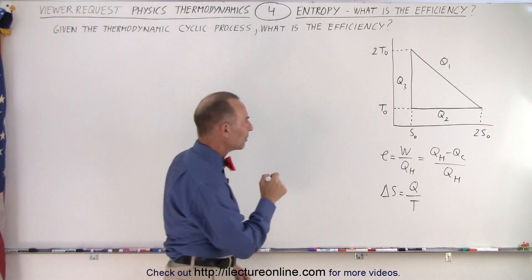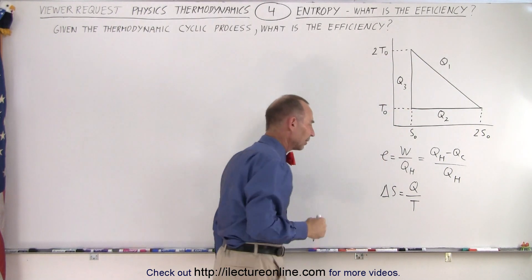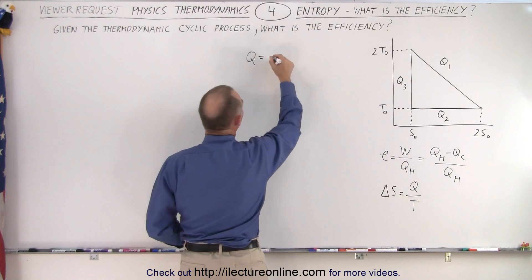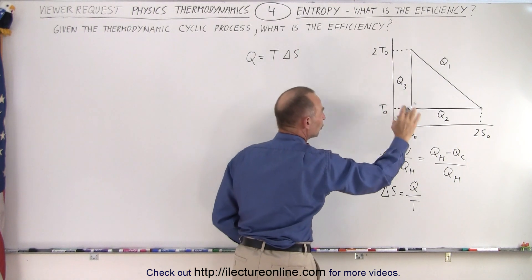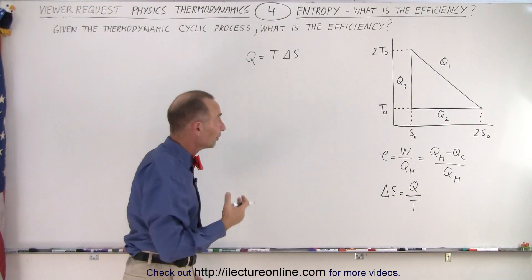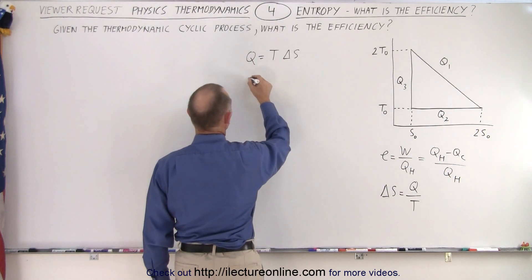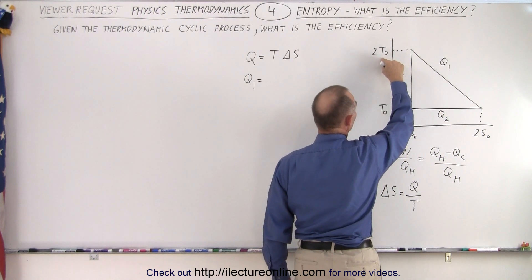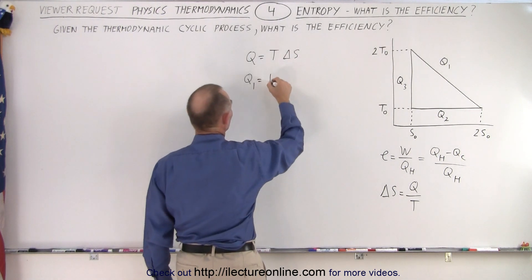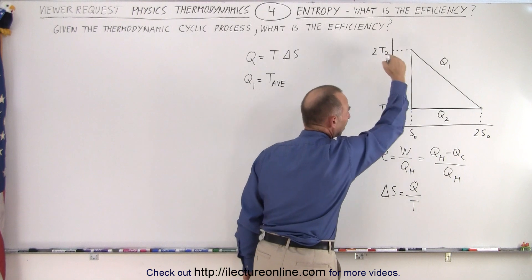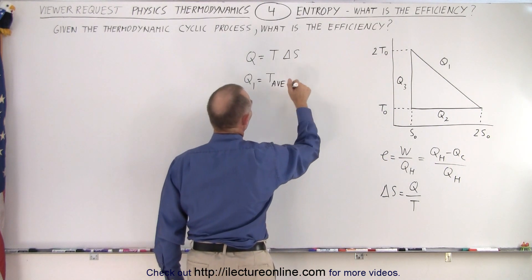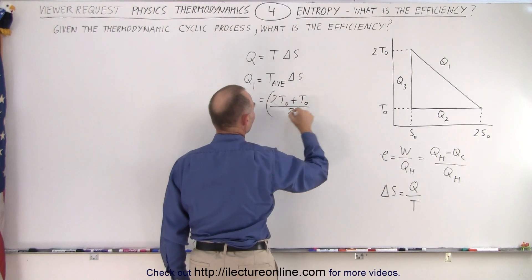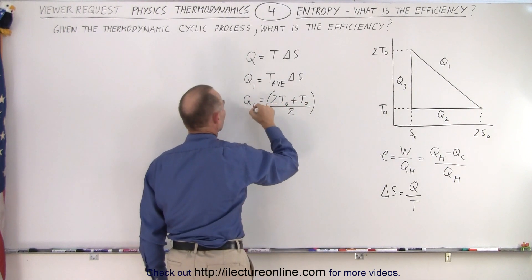We have three processes: Q1, Q2, and Q3 together — they form a cyclic process. Let's use Q equals T times delta S. So we can calculate Q1, Q2, and Q3 using the temperature times the change in entropy. For Q1, notice it goes from 2T sub-naught to T sub-naught, so we take the average temperature, especially because there's a linear relationship between the temperature and the entropy. So T average times delta S equals 2T sub-naught plus T sub-naught, divided by 2 — that's the average temperature over the process Q1.